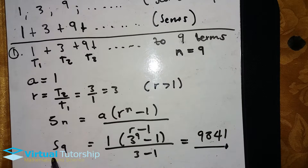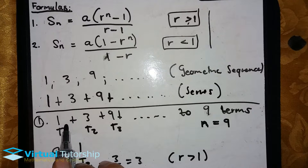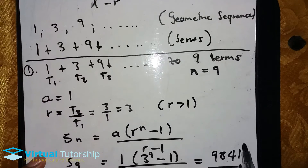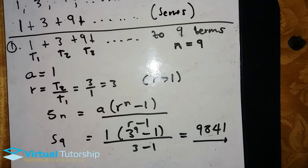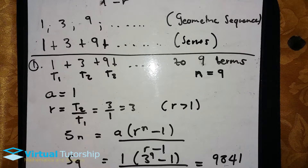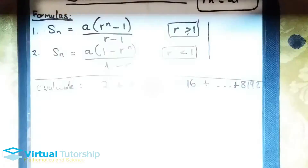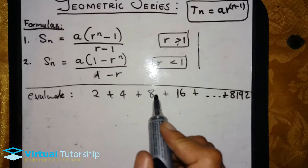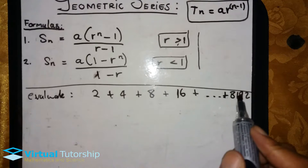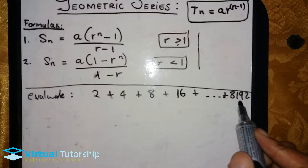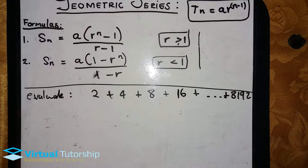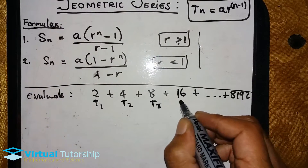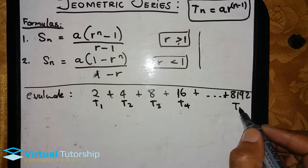That is my final answer. I added all the terms from term 1 all the way up to term 9, and I get that number. Now let's start another example. In this example, we need to evaluate: 2 plus 4 plus 8 plus 16, all the way up to 8,192. So this is the first term, second term, third term, fourth term, and this last one is the end term.